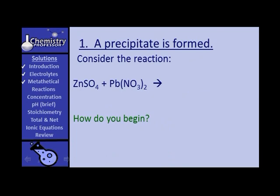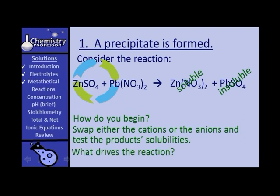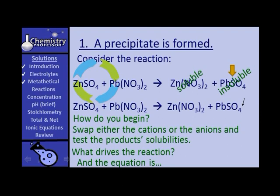Consider this reaction: we take zinc sulfate and plumbous nitrate and put them in solution. What you do is swap either the cations or the anions, then check out the solubilities of the products. If we swap the zinc and the lead — putting zinc with nitrate and lead with sulfate — zinc nitrate is soluble, but plumbous sulfate is insoluble. So the equation becomes: zinc sulfate plus plumbous nitrate gives zinc nitrate and a precipitate of plumbous sulfate.